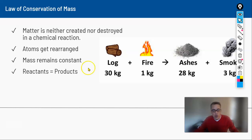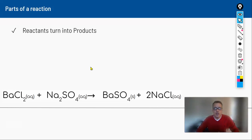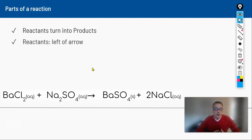We have two vocabulary terms: reactants and products. In terms of math, the total amount of reactants equals the total amount of products. Reactants and products are parts of our chemical equation. Think of it like putting a recipe together — the reactants are the things on the left of our arrow.